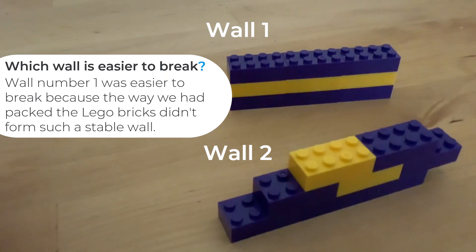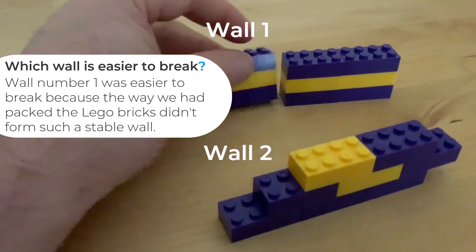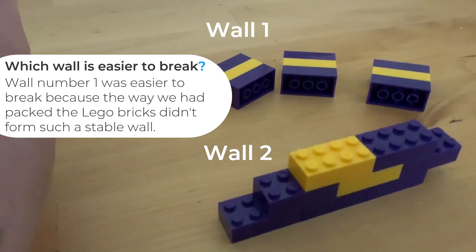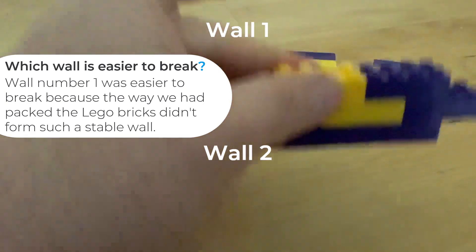So if you picked wall number one, you'd be right. Molecules that aren't connected are very easy to break than those that are connected.